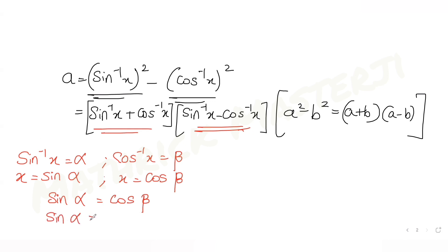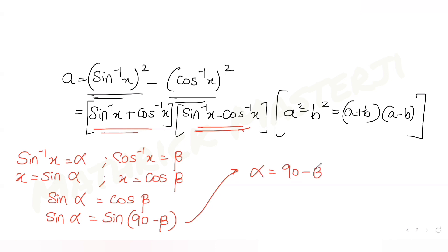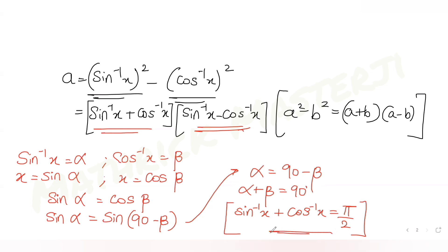From sin α = cos β, I can write this as sin(90° − β), giving α = 90° − β, so α + β = 90°. Since α is sin⁻¹x and β is cos⁻¹x, we get sin⁻¹x + cos⁻¹x = 90°, which is π/2 radians.